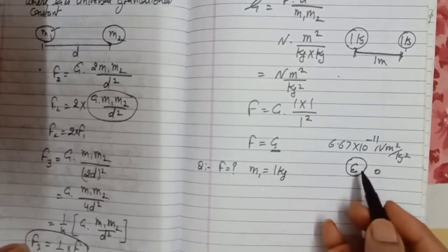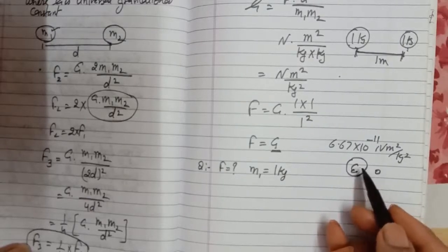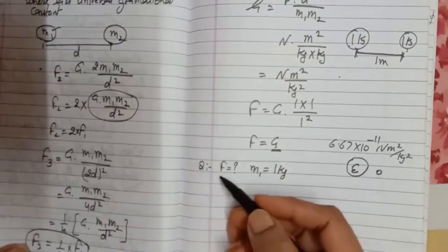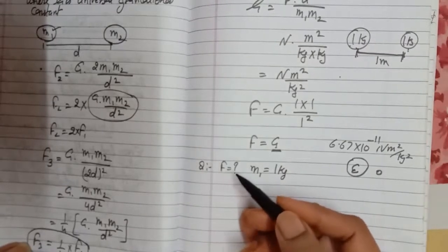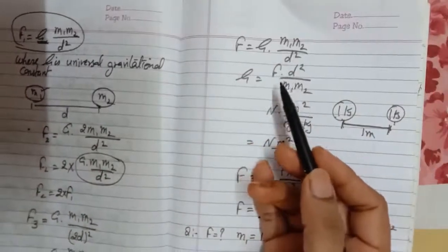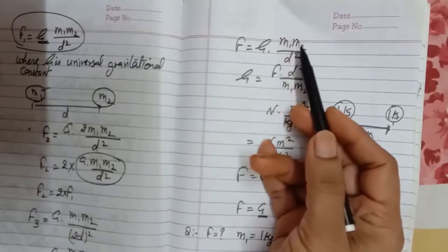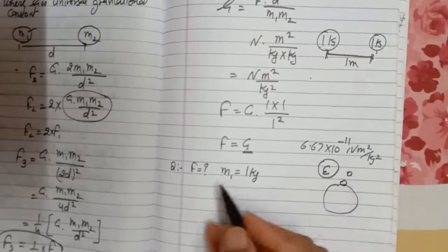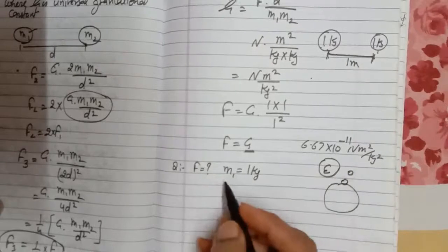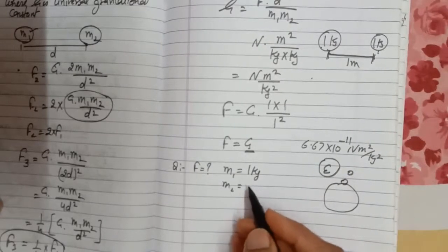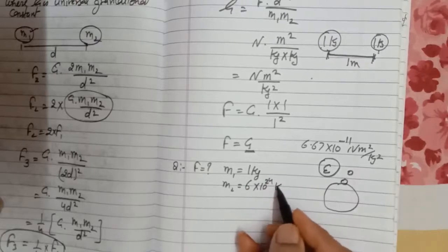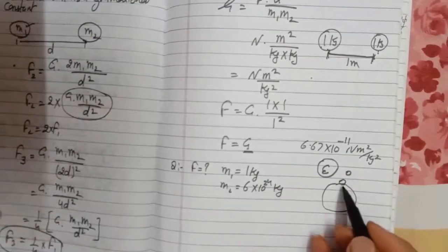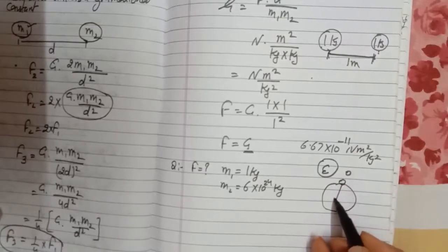The ball is lying on the surface of the earth. If we place the ball on the surface of the earth, there will be some attraction force between them, which we call the gravitational force. To find this, we use the formula F = G·M1·M2 / D². We need to know the mass of both objects and the distance between them. The mass of the ball M1 is 1 kg, and M2 is the mass of the earth, given in the question as 6 × 10²⁴ kg. The question also gives us the radius of the earth, which equals the distance between the object and the earth.